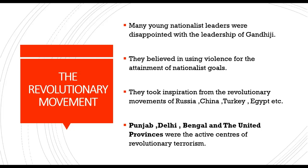The first topic is the revolutionary movement. Many young nationalist leaders were disappointed with the leadership of Gandhiji; they believed in using violence for the attainment of nationalist goals. They took inspiration from the revolutionary movements of Russia, China, Turkey, Egypt, etc. Punjab, Delhi, Bengal, and the United Provinces were the active centers of revolutionary terrorism in North India.